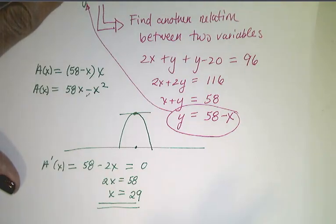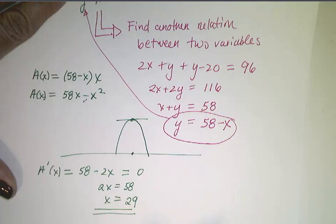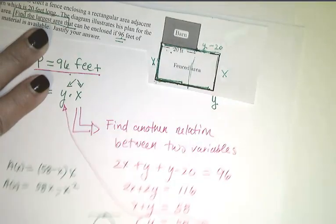So, x equals 29 is the critical number that maximizes this area function. But, remember what the question asked. It said, find the largest area. And this is not the area. This is the x value that gives the largest area.